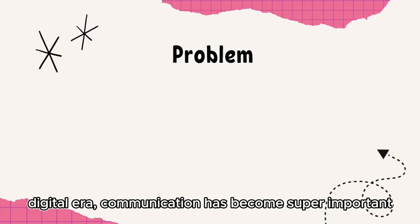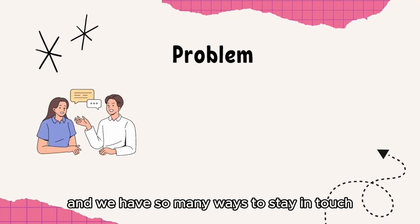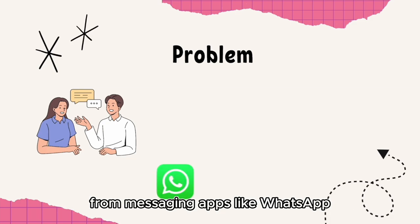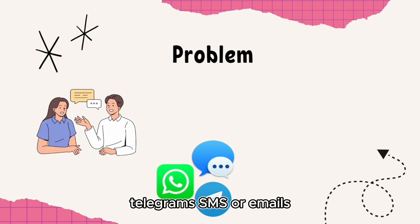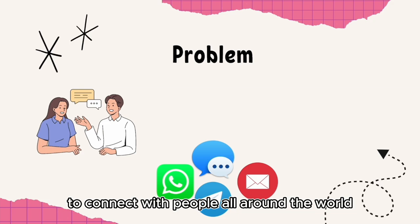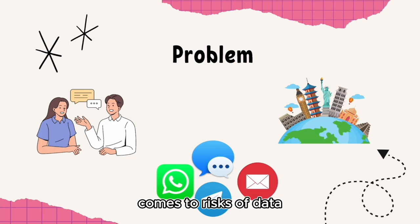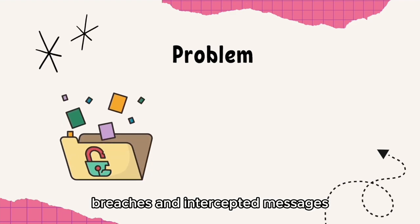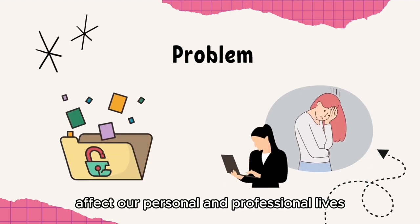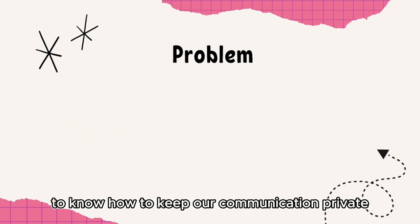In this fast-paced digital era, communication has become super important. And we have so many ways to stay in touch, from messaging apps like WhatsApp, Telegram, SMS, or emails. Technology has made it possible for us to connect with people all around the world, no matter how far apart we are. But with all this connectivity comes the risk of data breaches and intercepted messages, which can seriously affect our personal and professional lives.